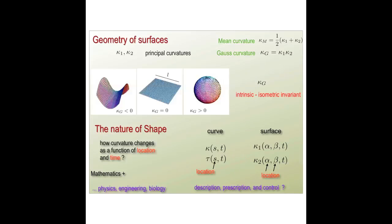The mathematics of shape, the nature of shape, basically is trying to characterize these quantities, the Gauss curvature and the mean curvature. And if you want the physics, how this relates to reality, is to understand and ask the question how does this curvature, how does shape change as a function of location and as a function of time?